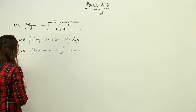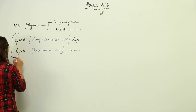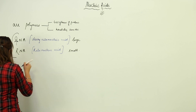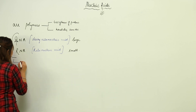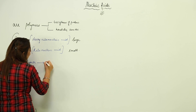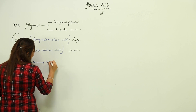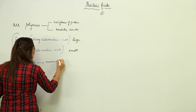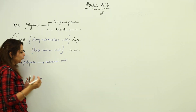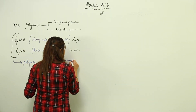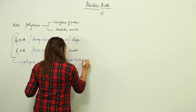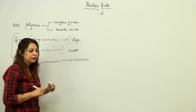Both of them are actually polymers and they are made up of small monomeric units. As you know, a polymer is made up of monomers — the small unit — and that unit is called a nucleotide.